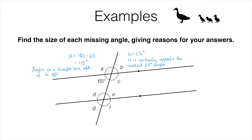To find out what C is we could use the same fact again — we've got a straight line and B plus C should add up to 180 degrees. Or we could use the fact that this angle is vertically opposite this angle, therefore those two are the same. That means C equals 115 degrees.